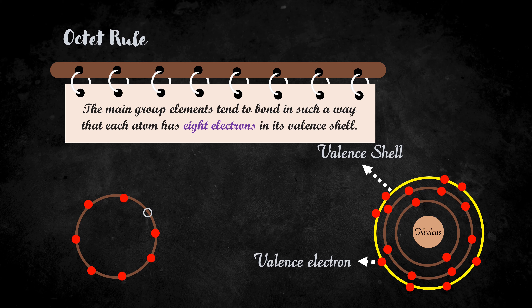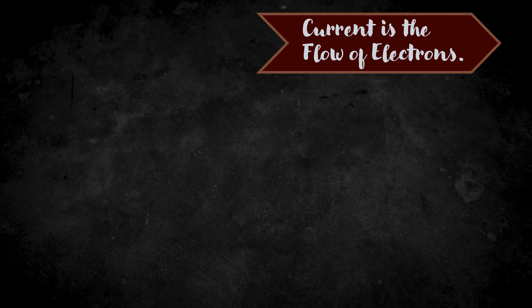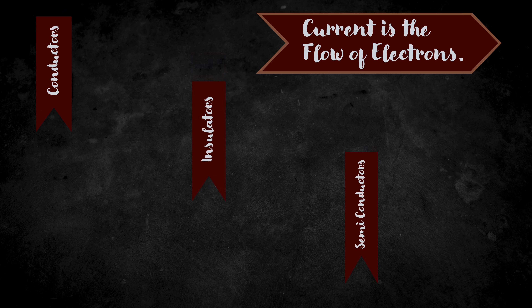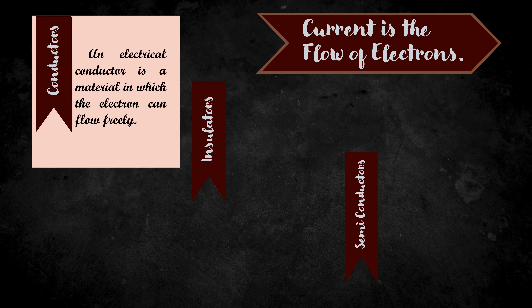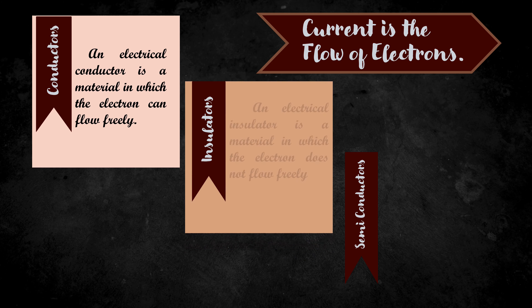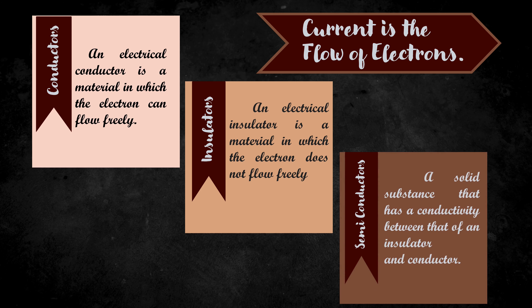A hole is the absence of an electron in a particular place in an atom. In the same way, each time an atom loses an electron, a hole is formed in that place. We know that current is a flow of electrons. So depending on this, materials are classified as conductors, insulators, and semiconductors. The conductors are materials in which electrons can flow freely. The insulators are materials in which electrons do not flow freely. Semiconductors are materials whose conductivity is between insulator and conductor. An example of a semiconductor is silicon.